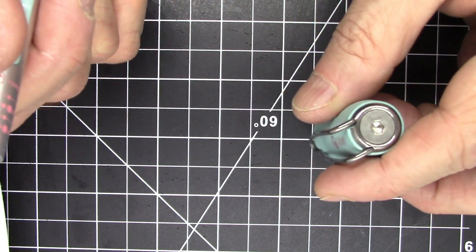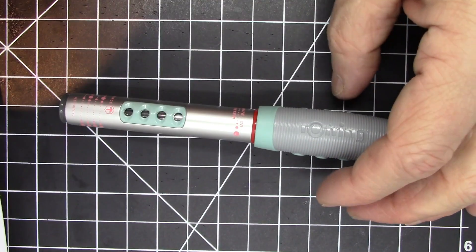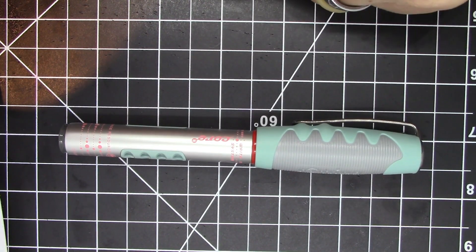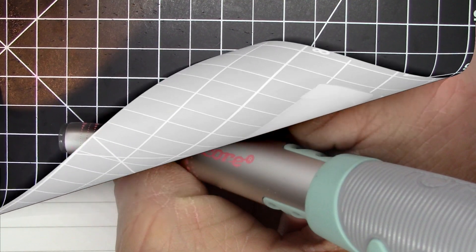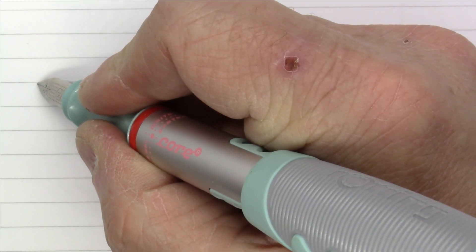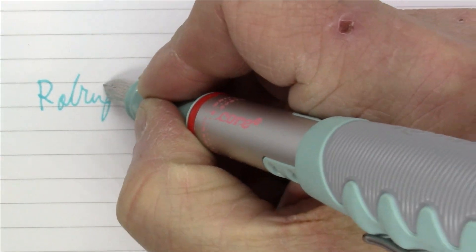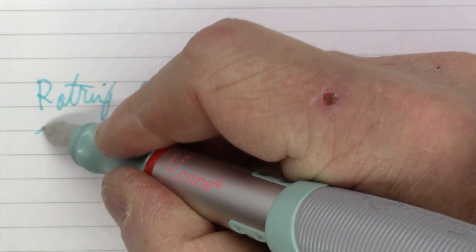So that is the Rotring Core and pretty much what the parts of this pen look like. Of course, as we always say, pens were meant to write and this one is no exception. I'm going to show you how it writes right now. Okay, what we're writing with you today is a Rotring Core and this has a steel nib.